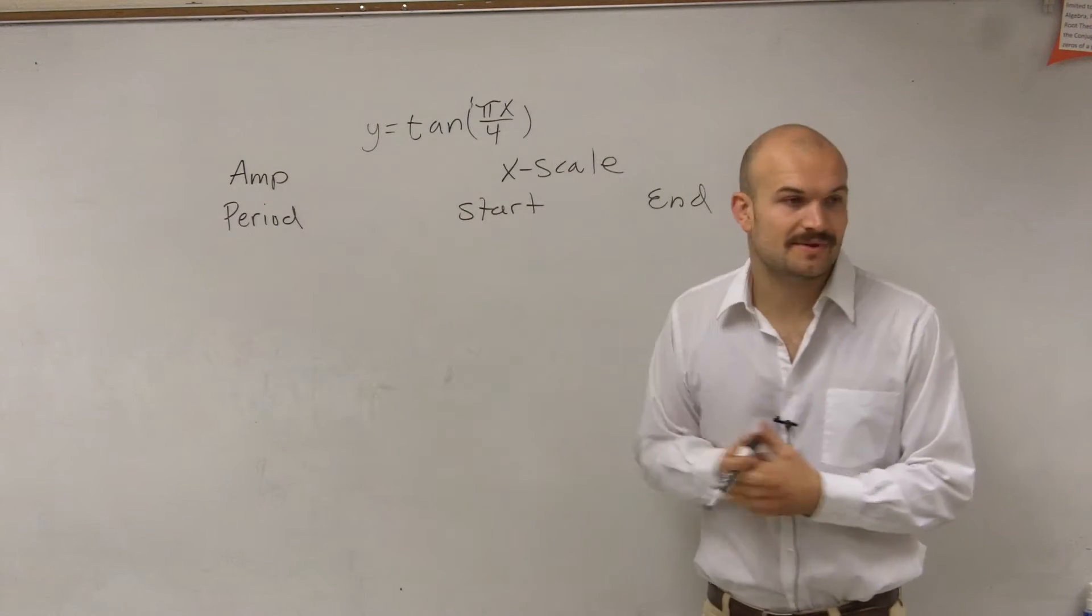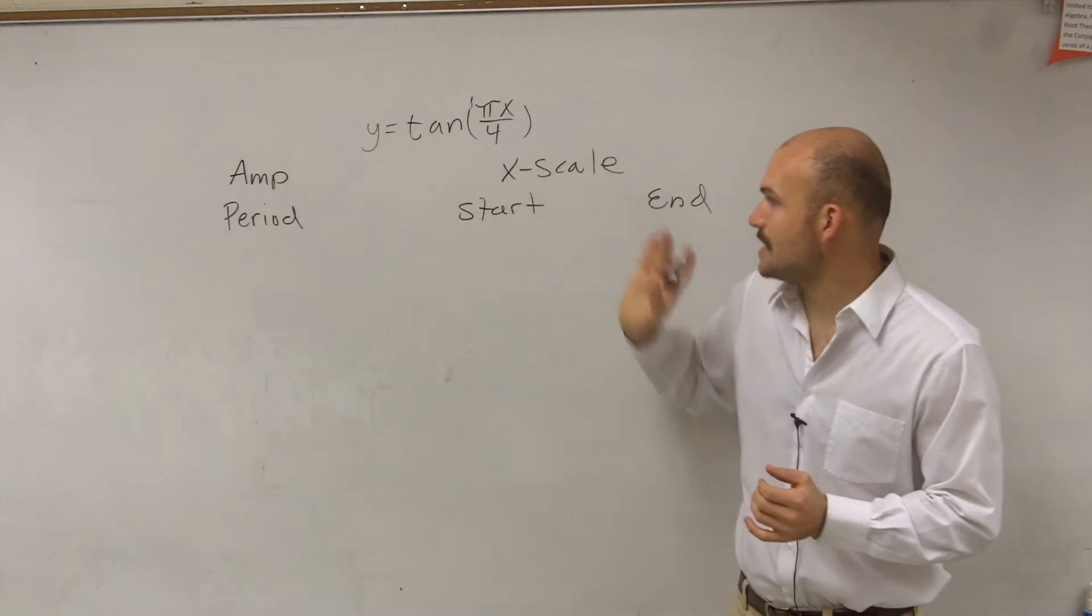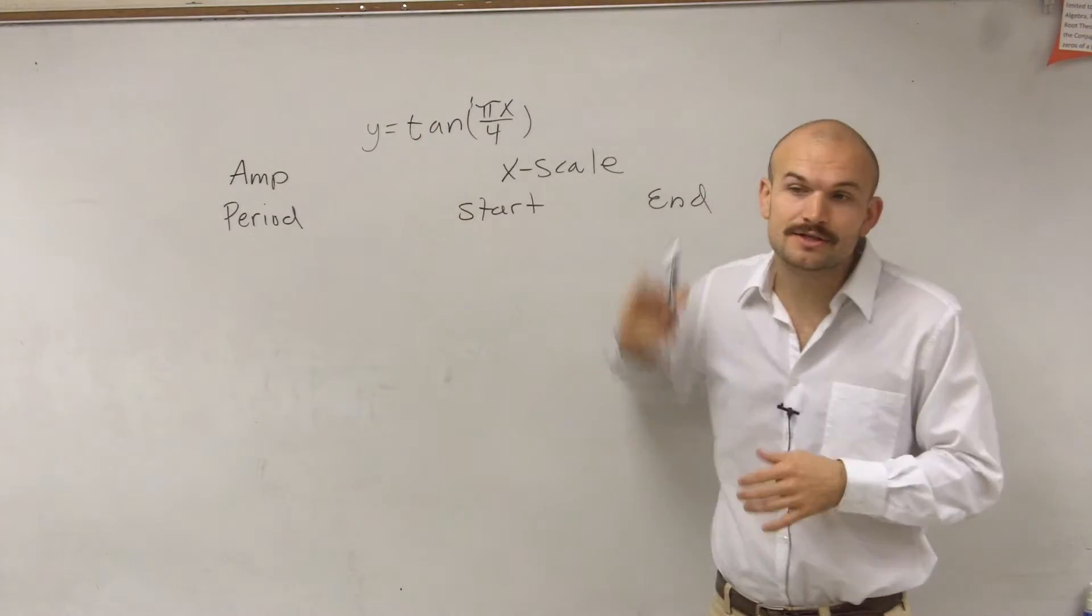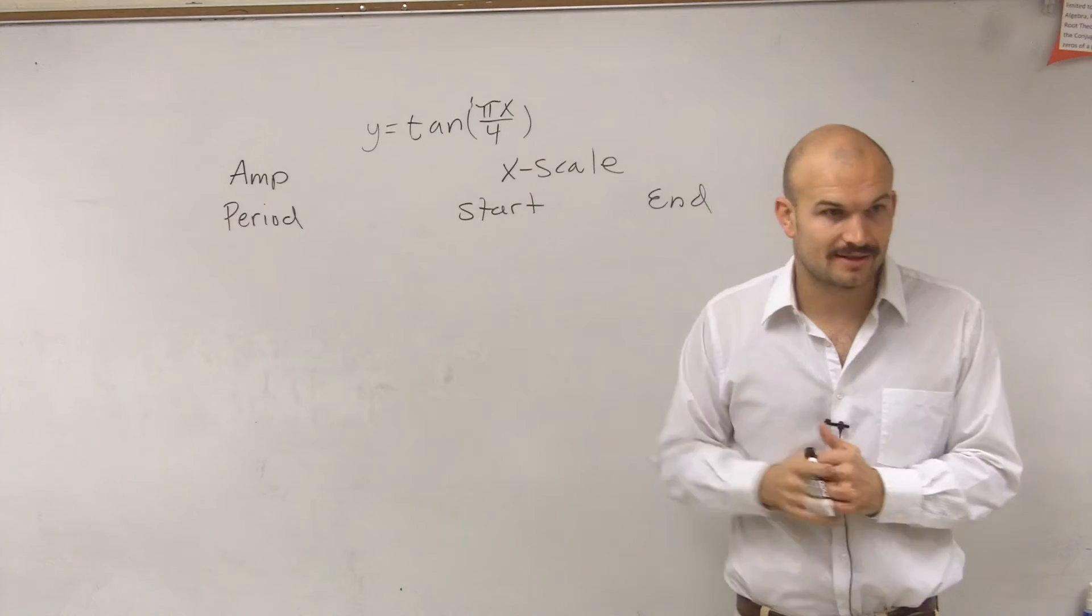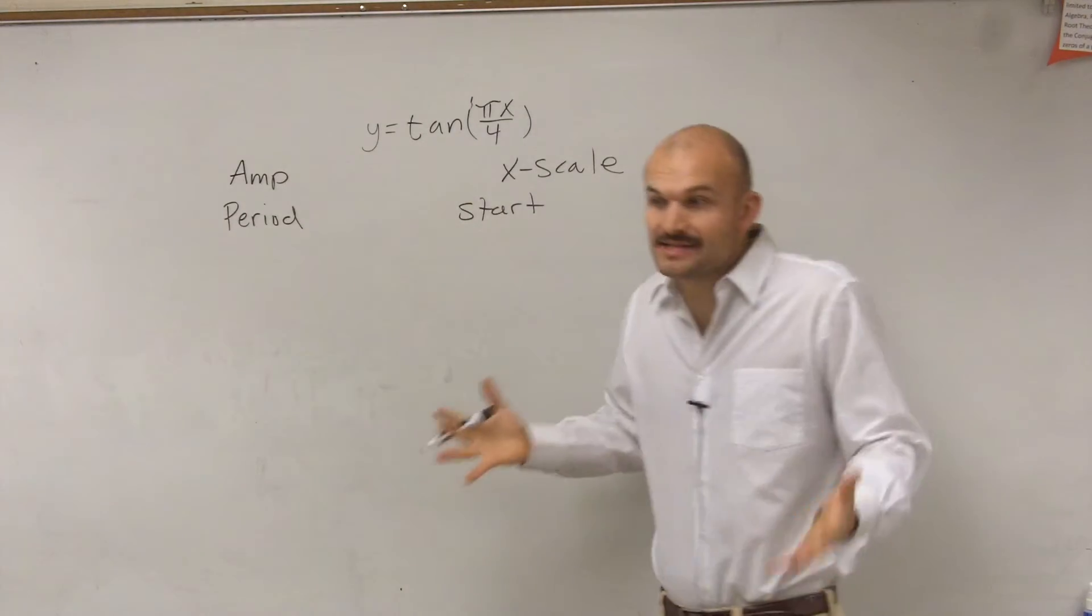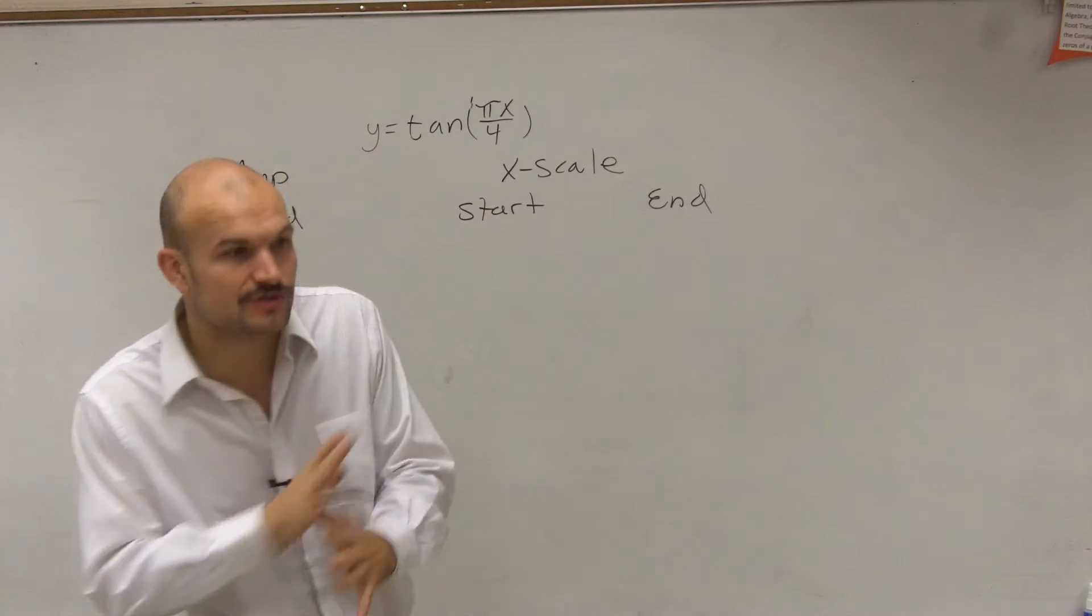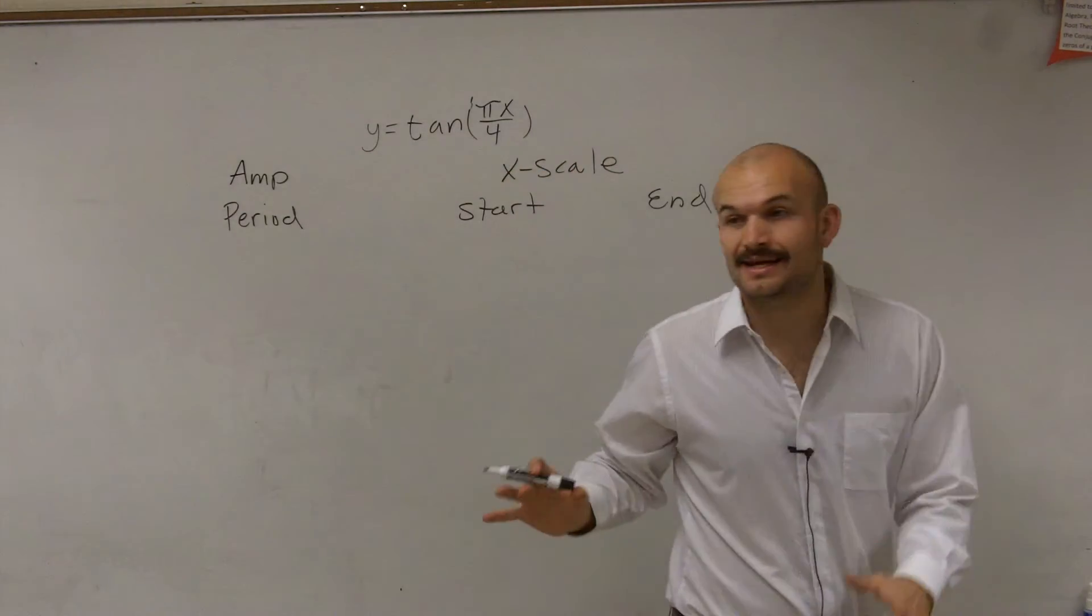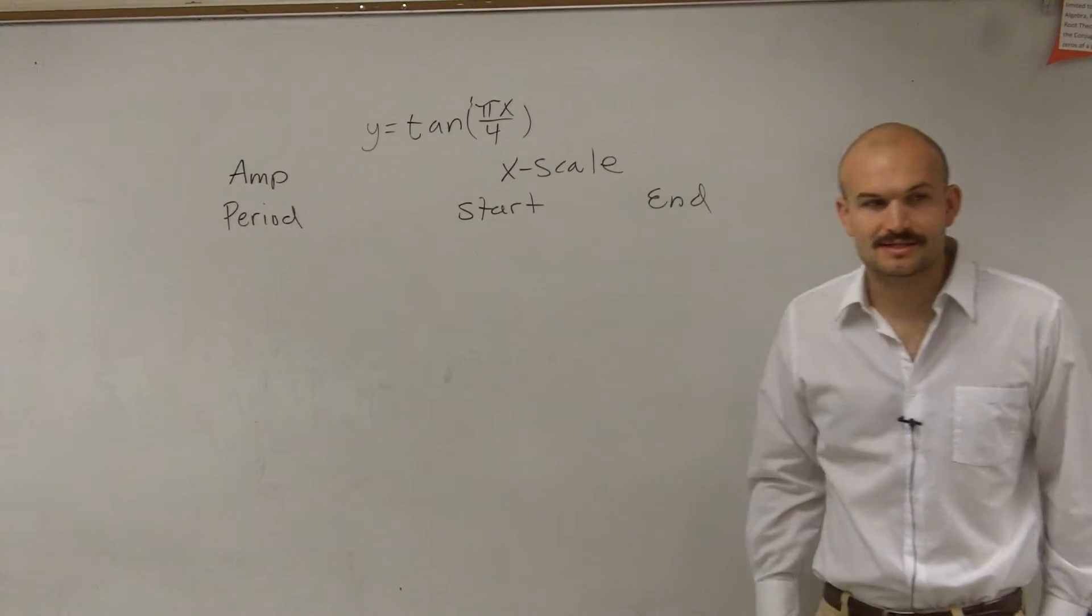I want to make sure you guys all have this written down: the amplitude, the period, the x scale start and the end. That's what we did for every single graph. You should know how to do this for every single one of your trig functions, and that's what you should first do before you even try to graph anything. You need to be figuring out this information.